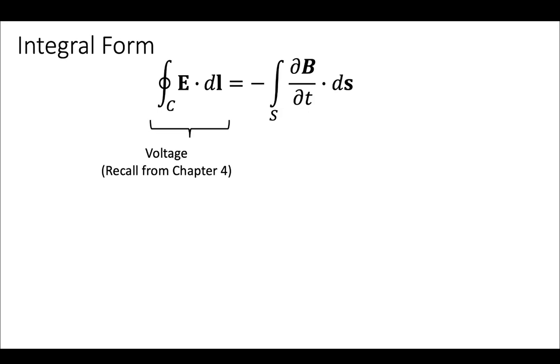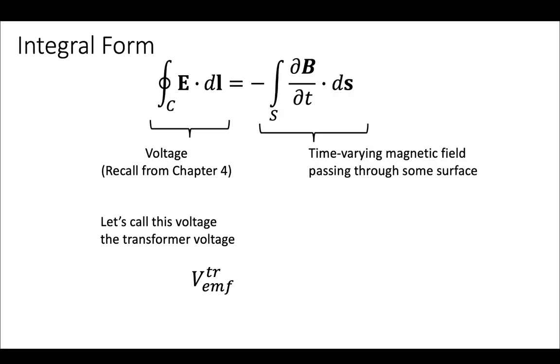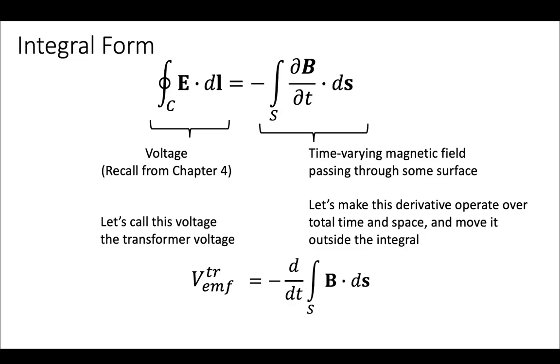On the left side, we can see that this is going to be a voltage. We remember this from chapter 4. We're going to call this voltage the transformer voltage, the V_EMF^tr. EMF stands for electromotive force. On the right side, we're going to have a time-varying magnetic field that's passing through some kind of surface. We're going to make this derivative operate over all of time and space, so we're going to move it outside of the integral.